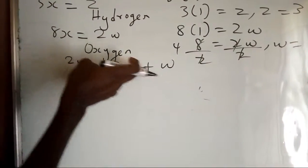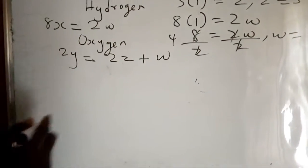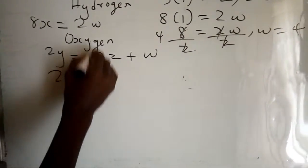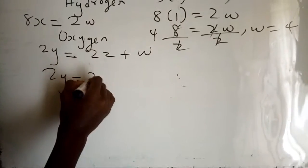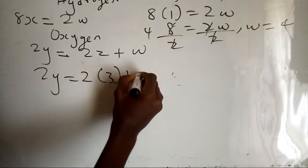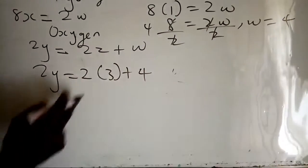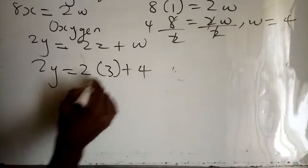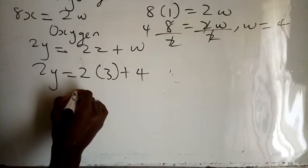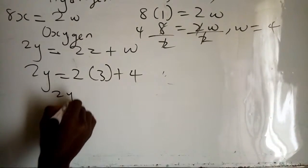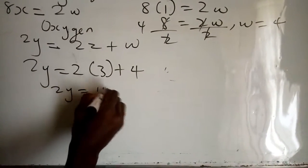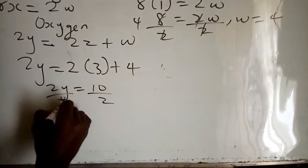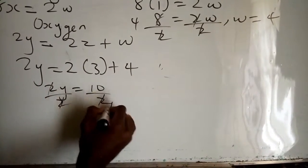Now we know z equals three and w equals four. For oxygen: 2y equals 2z plus w, which is 2 times 3 plus 4, giving us 6 plus 4 equals 10. So 2y equals 10, divide by two, and y equals five.